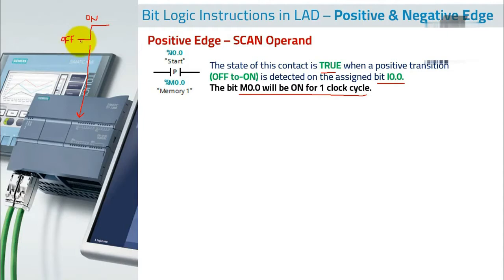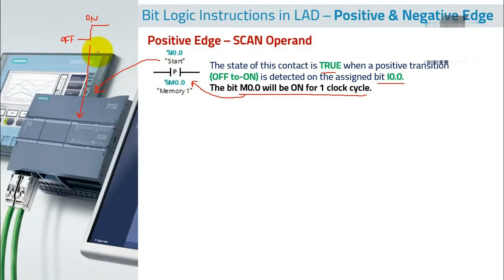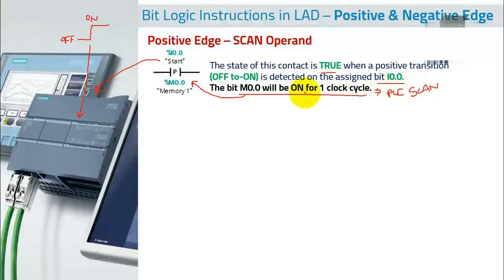If that state goes from off to on, a pulse will be detected at M0.0. This bit will be on for one clock cycle, which is typically equivalent to your PLC scan cycle. For example, if your PLC scan cycle is five milliseconds, this bit will be on for five milliseconds.